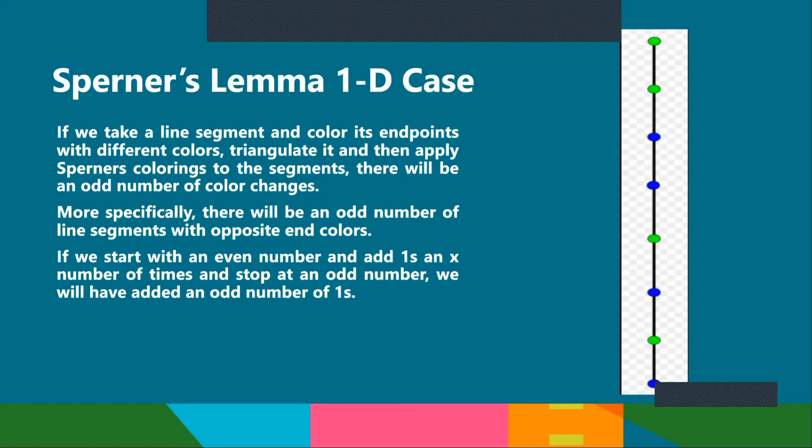Just a quick application, or more relevant example which we're all familiar with, is that if you take an even number and you add an X amount of ones to it, and then we stop adding ones when we're at an odd number, then the total number of ones we will have added will be an odd number.